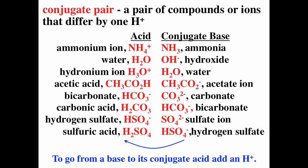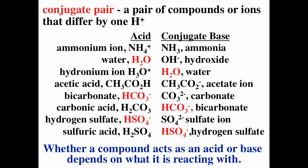To go from the base to the conjugate acid, we add a hydronium ion. For example, SO₄²⁻ — we add a hydronium ion, giving us HSO₄⁻, so we increase the hydrogen and also increase the charge. Note that water appears under both the acid and base categories, so it depends what it's reacting with. Bicarbonate and hydrogen sulfate can also be either an acid or a base depending on what they're reacting with.